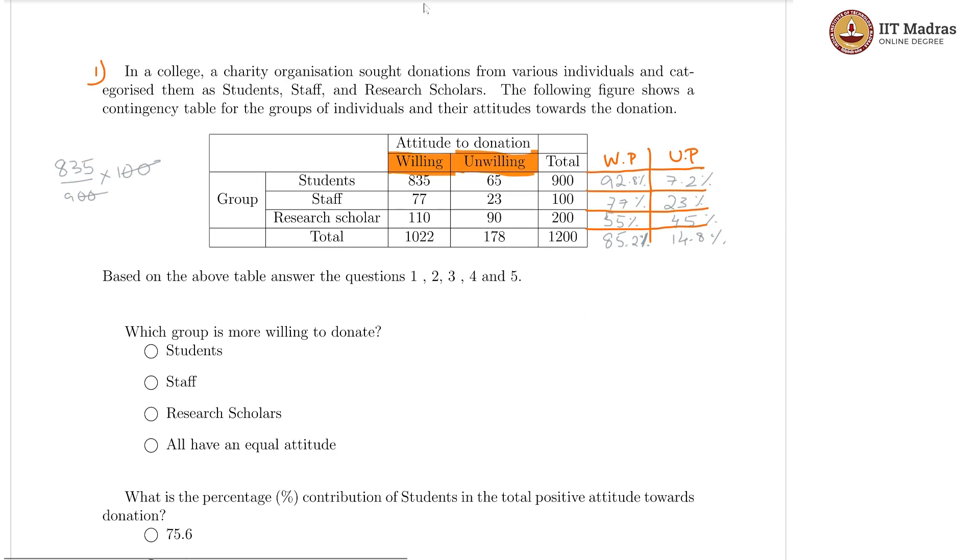Now, the question is which group is more willing to donate, and it is pretty clear that 92.8 percent is the maximum in the willing percentages. So, our answer should be students. Students are most willing to donate in this case.